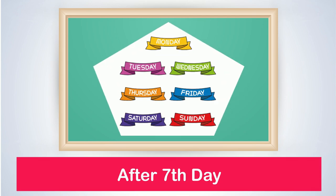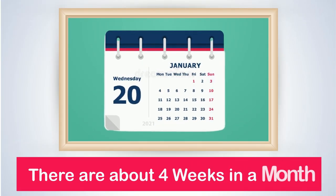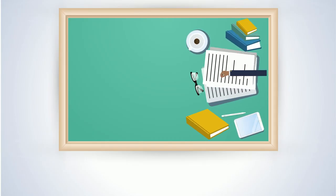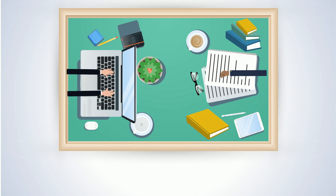After the seventh day, that is Sunday, it goes back to the first day of the week, that is Monday. This is how the cycle of the week goes on. There are about four weeks in a month.